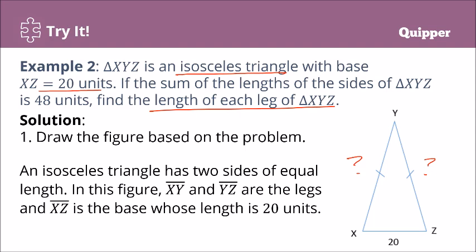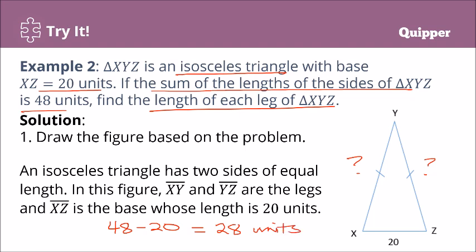Since the sum of the lengths of the sides of the triangle is 48 units, and lahat pag pinagsama mo — in-add mo lahat ng lengths — that's 48 units. So, 48 minus 20 gives us the total of the two legs, which is 28. Dahil equal silang dalawa — yung legs ay of equal measurement kasi isosceles — we have 28 divided by 2, which is equal to 14 units.